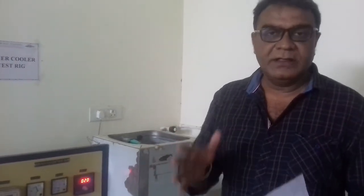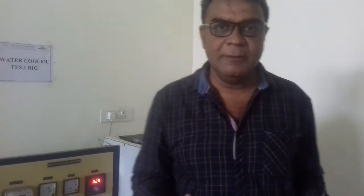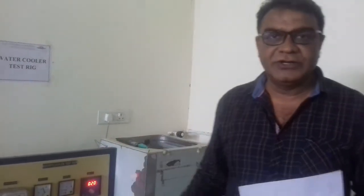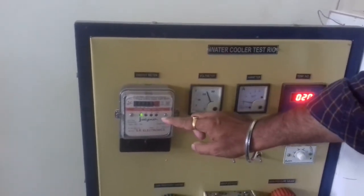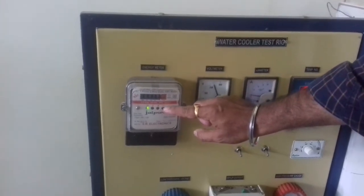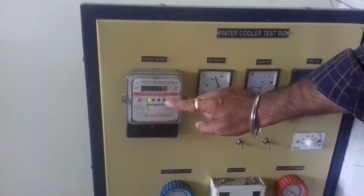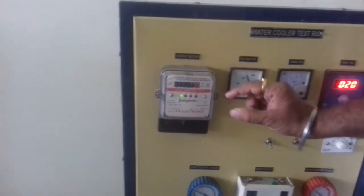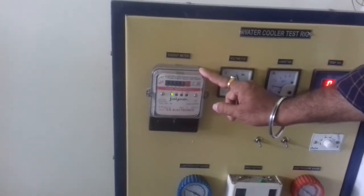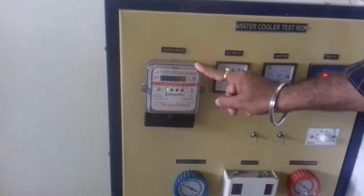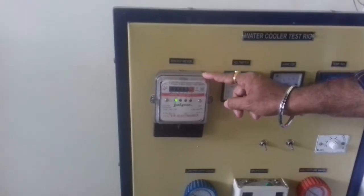By finding from the pressure-enthalpy chart we can find out the enthalpy, and from enthalpy we can calculate the COP. From this we can find out the theoretical COP. Now for the actual COP, we have to measure the time for 10 blinks. Here you can see the light which is blinking — for 10 blinks we have to measure the time. From this we can find out the actual work supplied to the compressor.